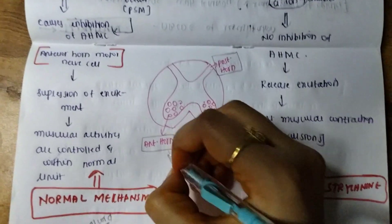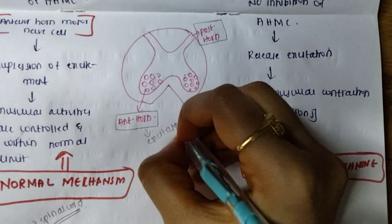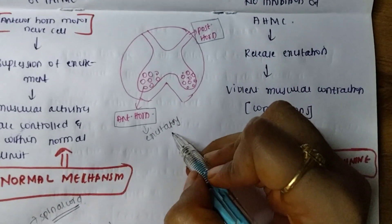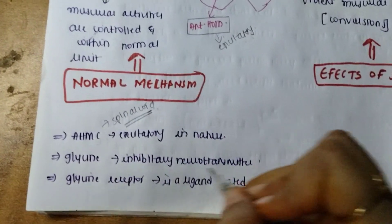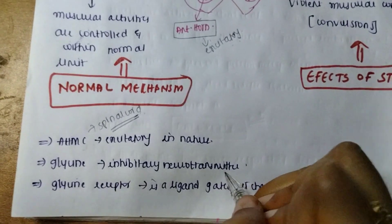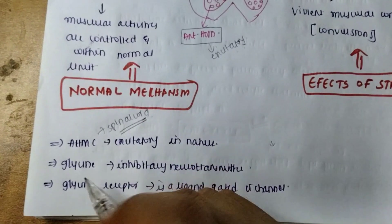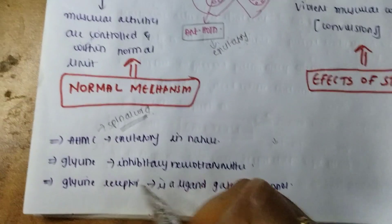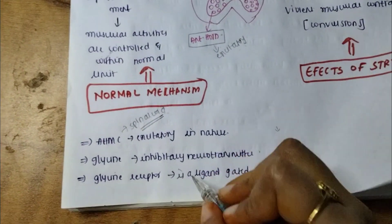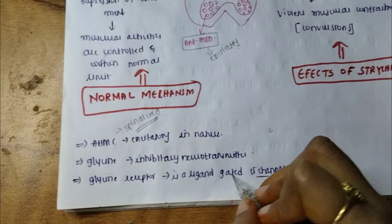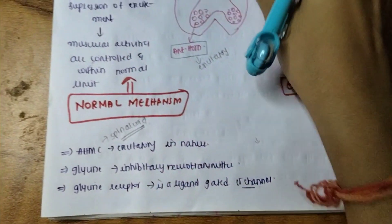This anterior horn motor cell is excitatory in nature. Now, glycine is an inhibitory neurotransmitter, meaning any action it will inhibit — that is why it is known as an inhibitory neurotransmitter. The glycine receptor is a ligand-gated chloride channel receptor. Remember these three points.